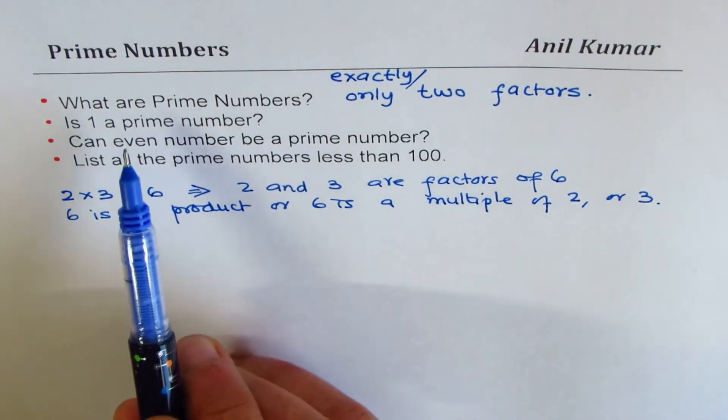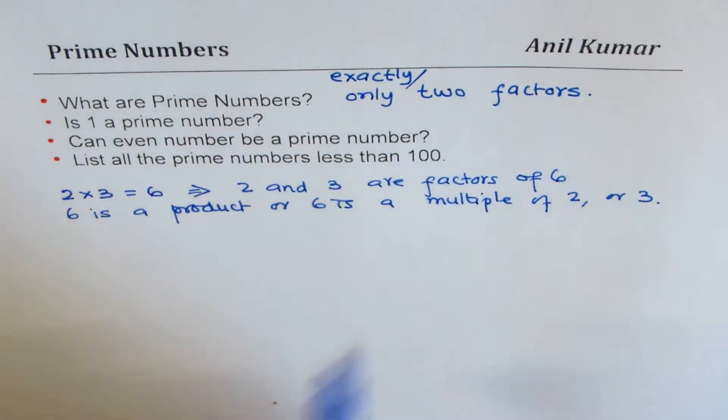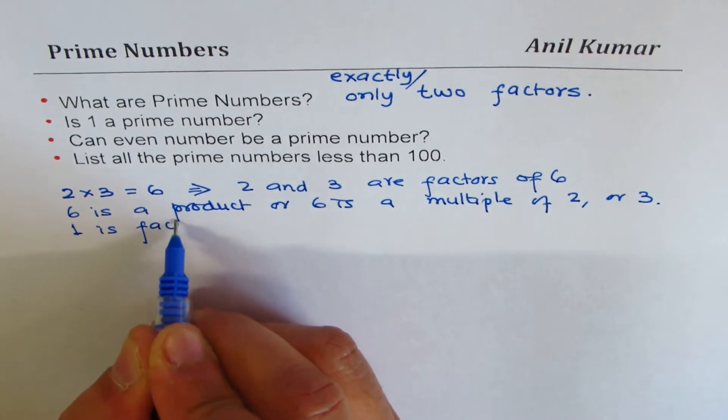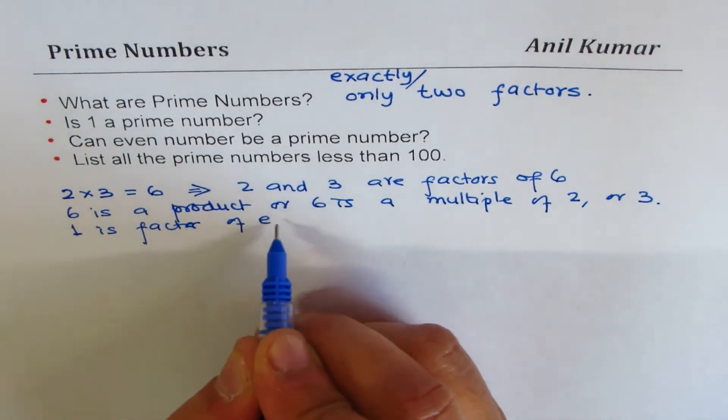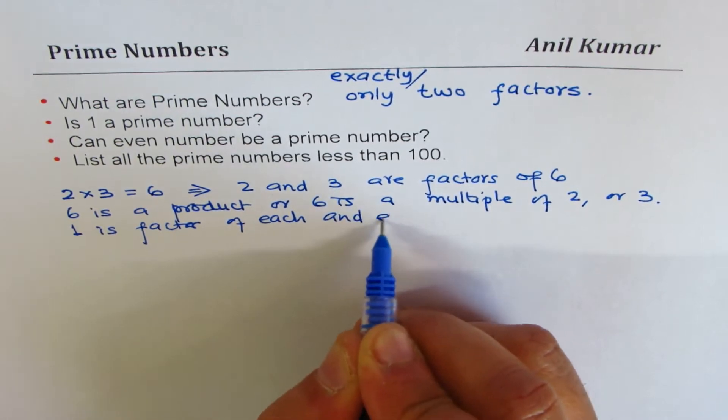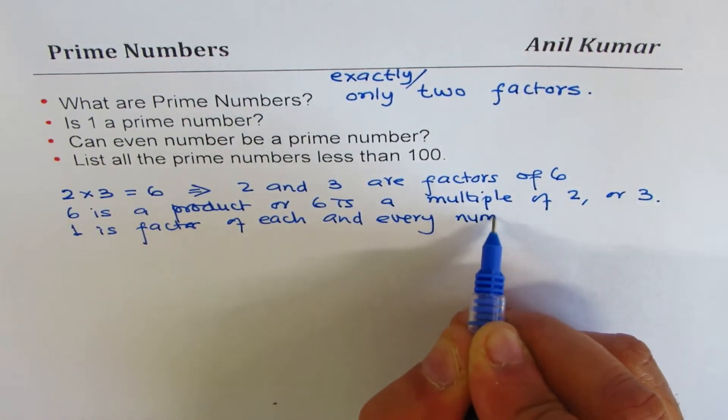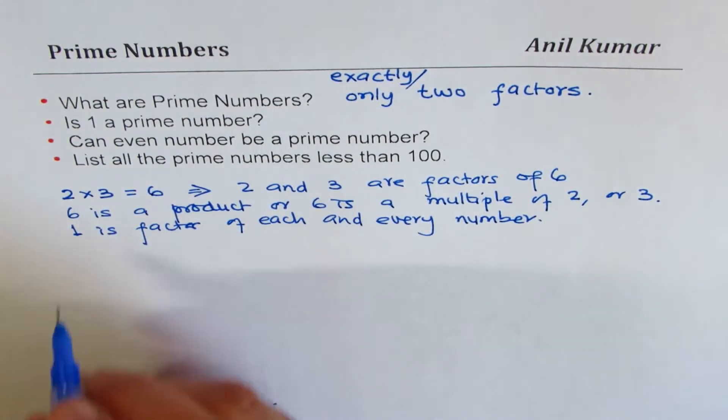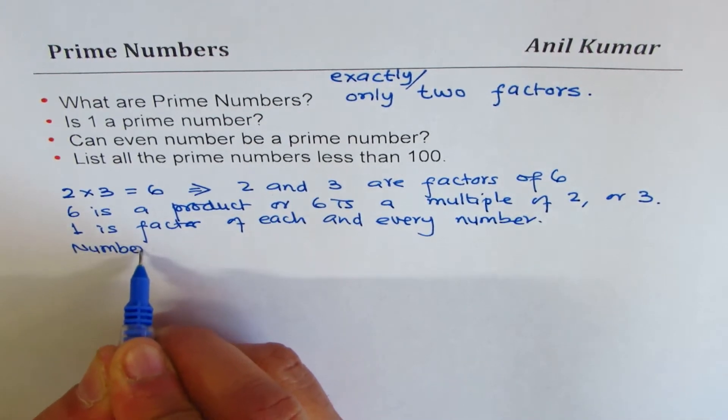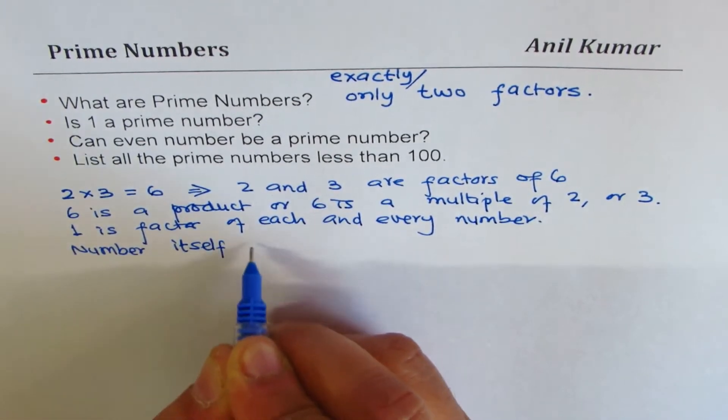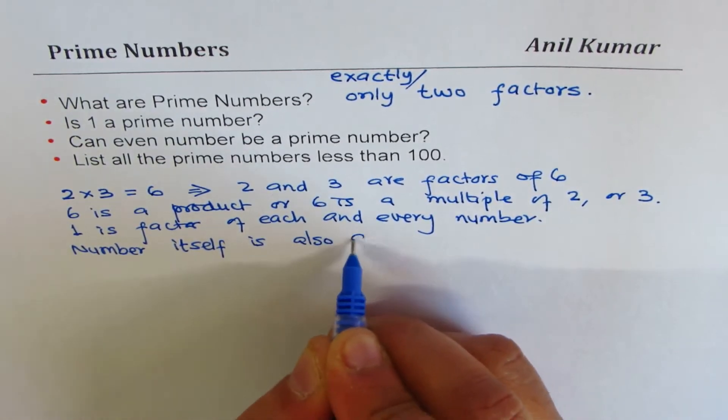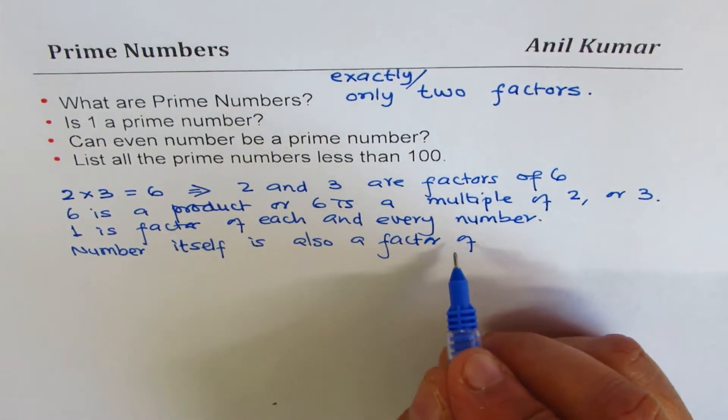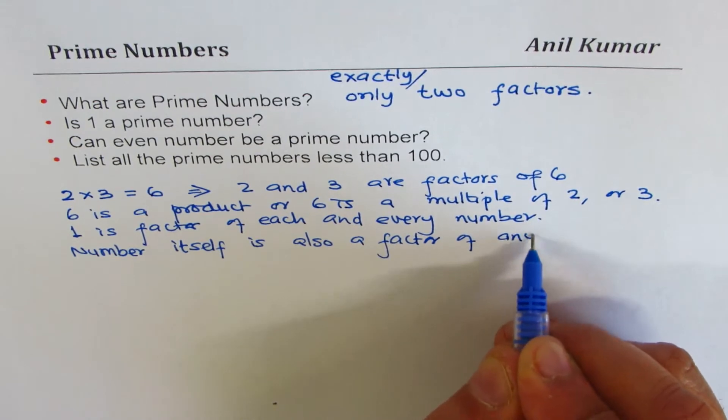When we are saying prime numbers and we say only two factors, we know one is a factor of each number. You can divide any number by one and number itself is also a factor. Number itself is also a factor of any number.